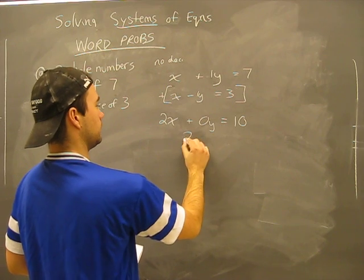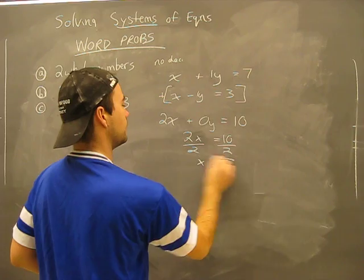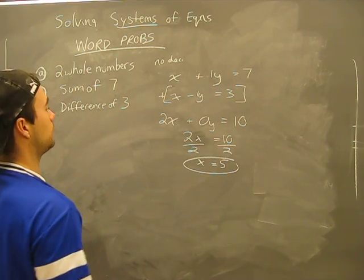Let's solve this here. Two x equals ten. Multiply by one half: x equals five.